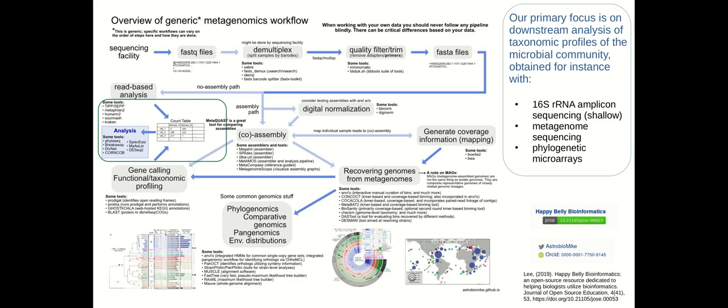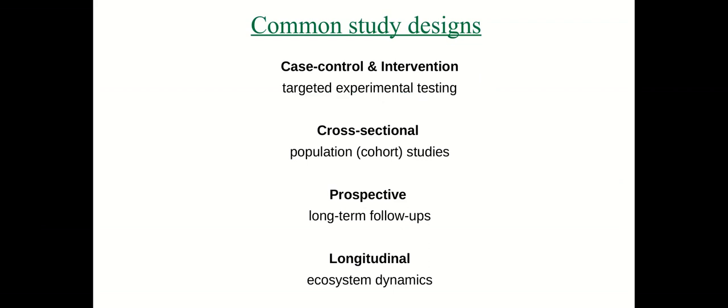We can also use shallow metagenome sequencing or phylogenetic microarrays to do profiling of the taxonomic composition. The taxonomic composition can also be used to predict functional composition of microbiomes, or the functional composition can be measured by other means, and then we are receiving the multi-omics setup where we can combine multiple parallel measurement sources.